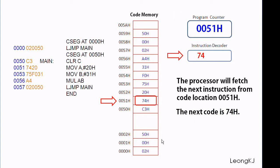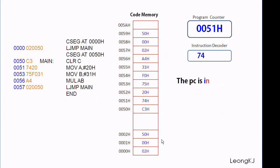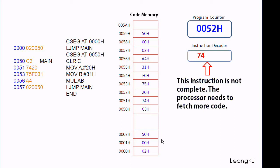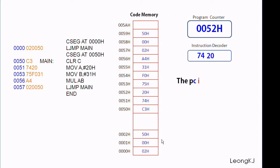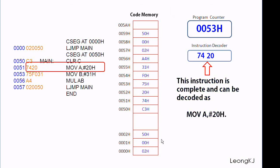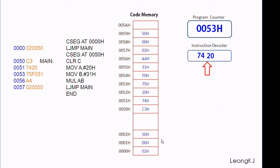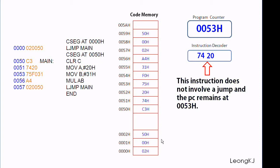The next code is 74 hex. The PC is incremented by 1. This instruction is not complete — the processor needs to fetch more code. The processor fetches the next code from code location 0052. The PC is incremented by 1. This instruction is complete and can be decoded as MOV A, #20 hex. This instruction does not involve a jump, and the PC remains at 0053.